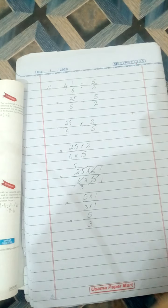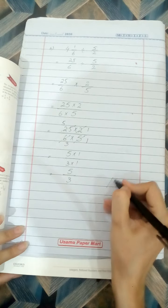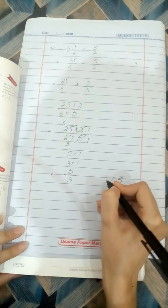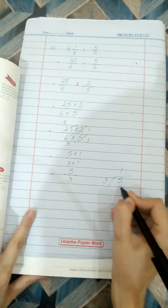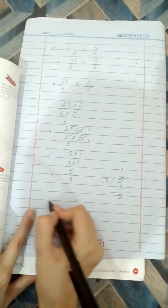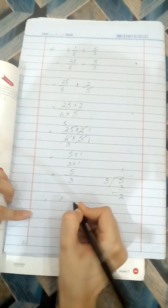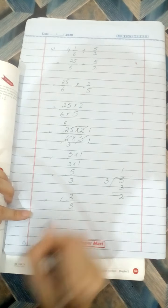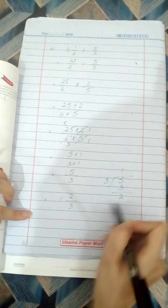Students, we can simplify it again. 5 and 3 divide it, 3 and 3 is 1, 2 is answer. We can write it 1 whole 2 by 3, 1 whole 2 by 3, clear. This is our answer, students.